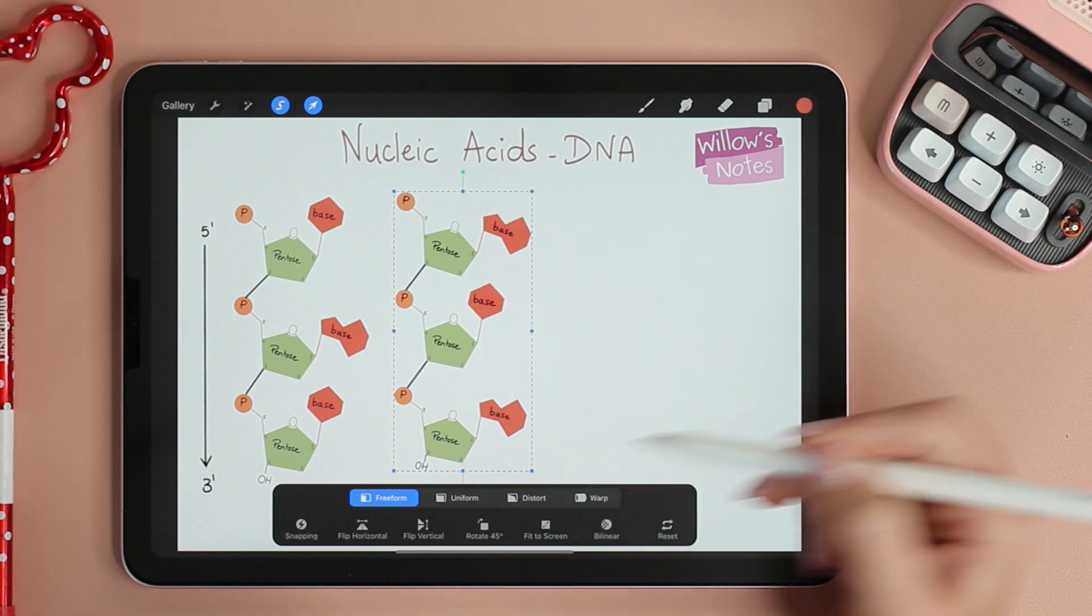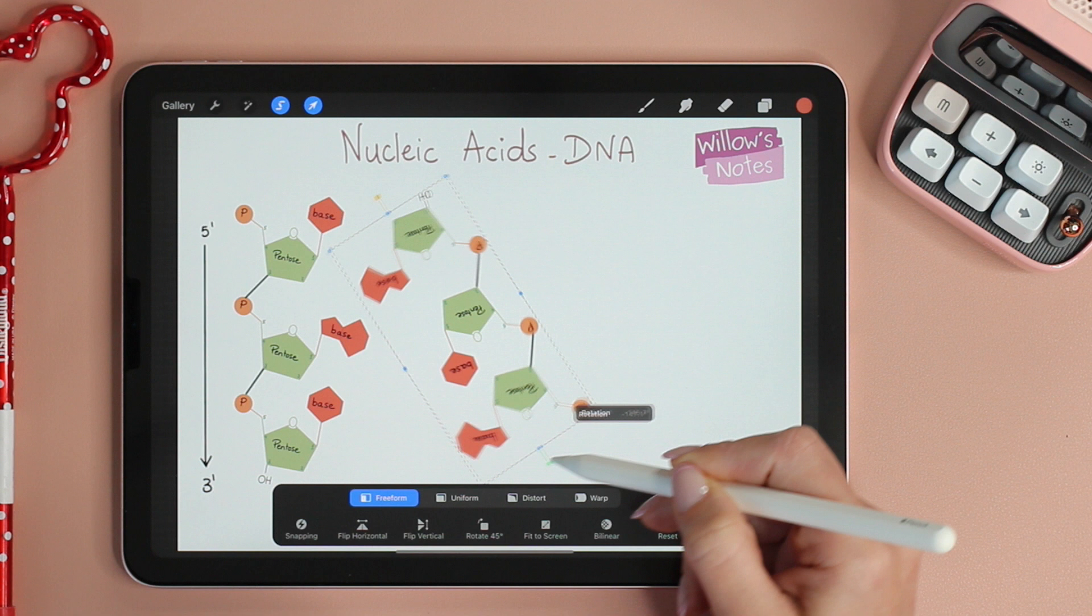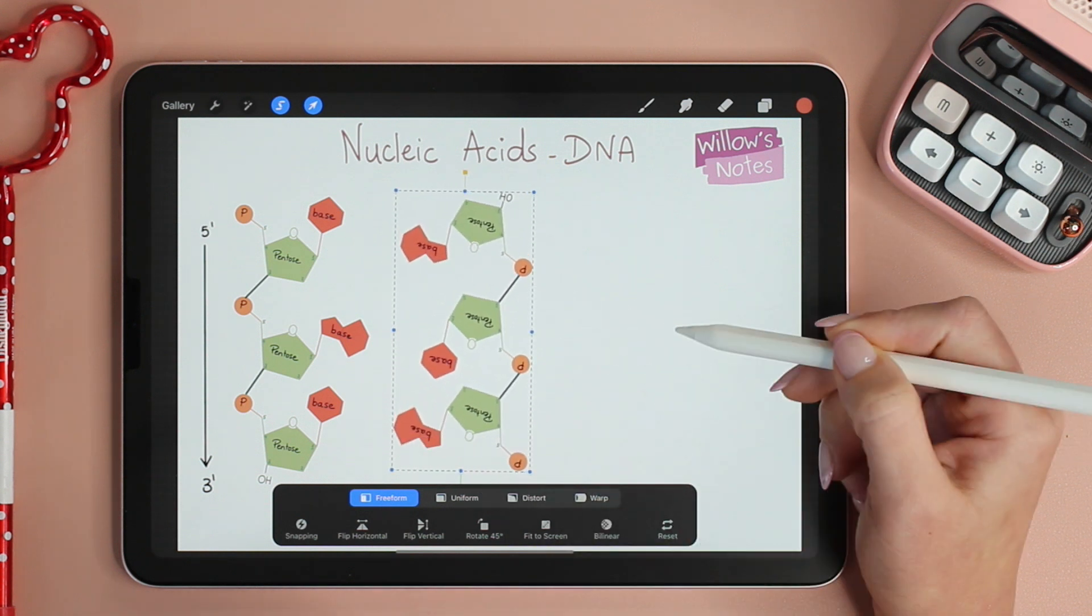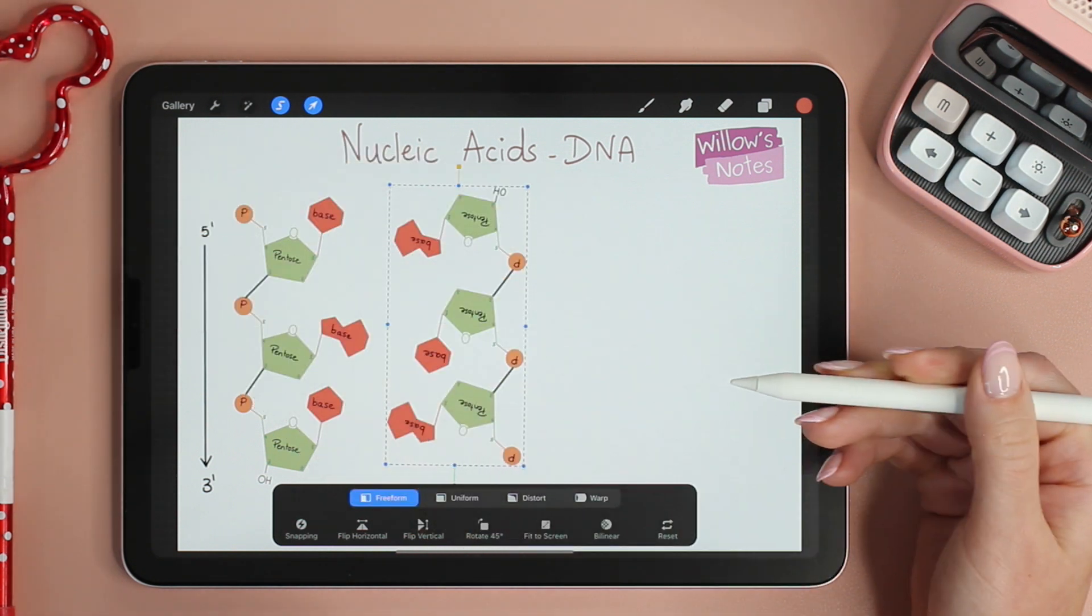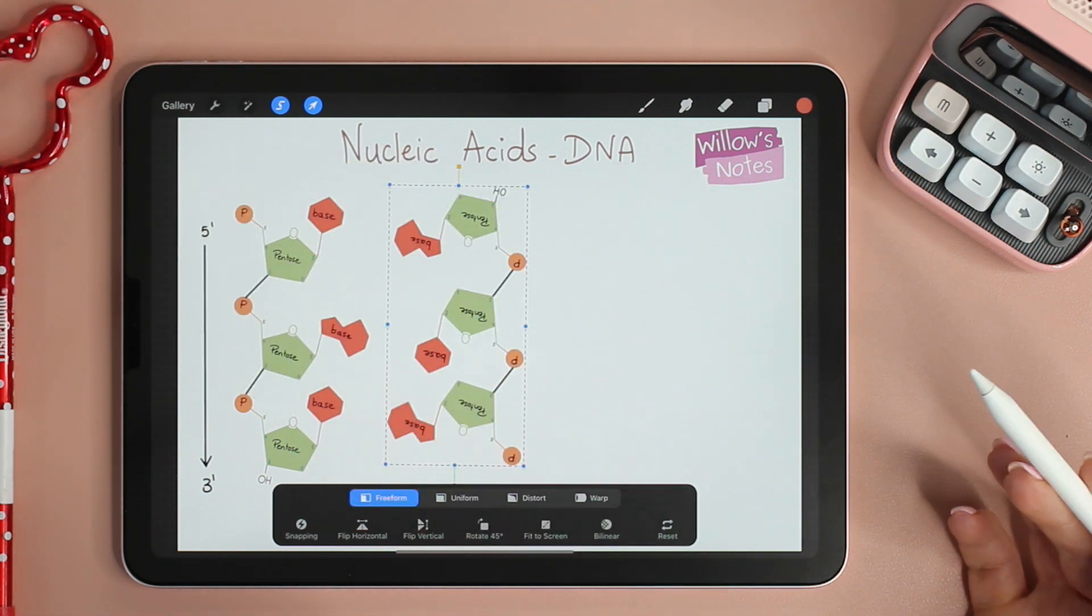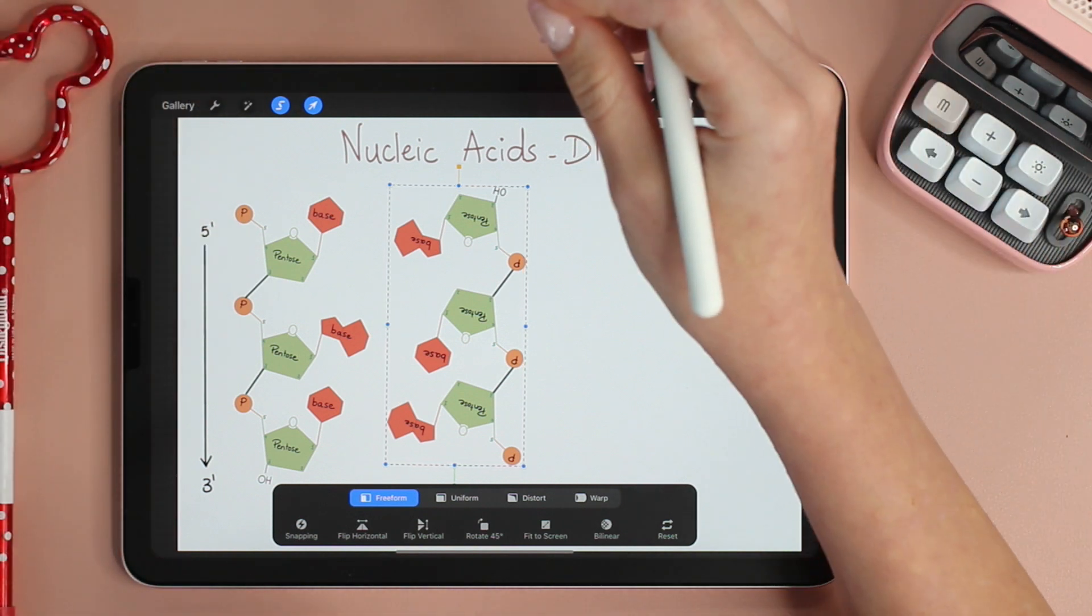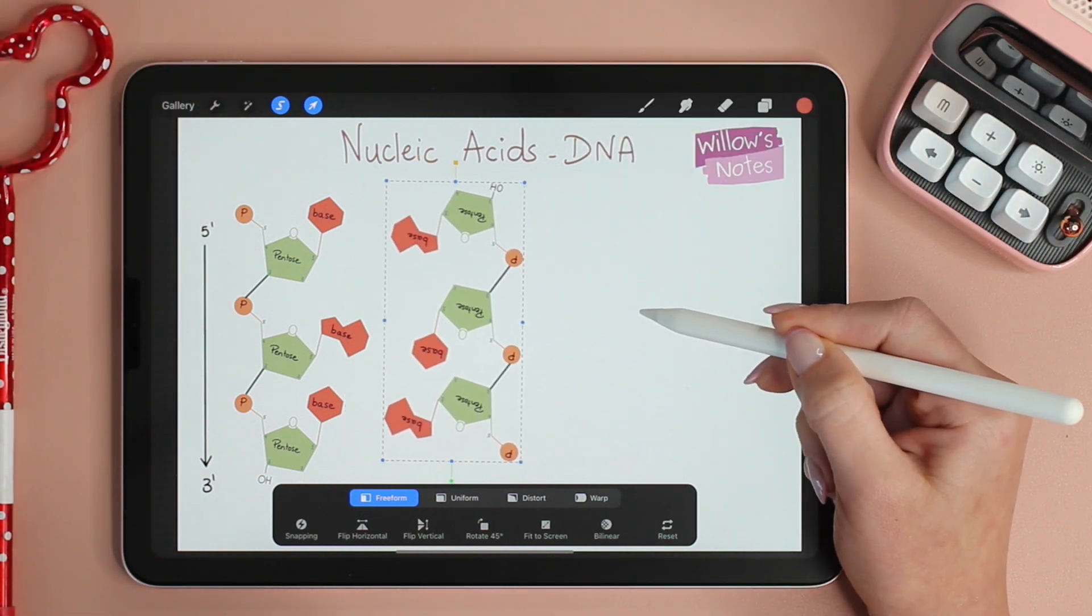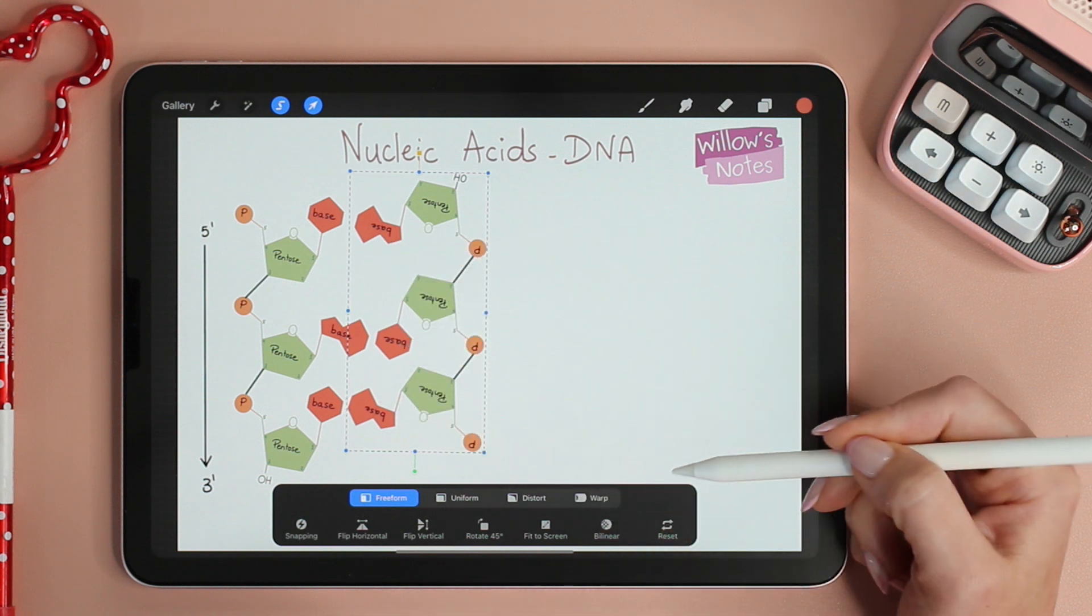So we will take the strand and give it a 180 degrees turn. If you're doing this on a piece of paper, my advice is to draw one strand on a separate piece of paper and the second on another so that you can hold the paper and turn it upside down. And once you turn it upside down, look at how perfectly they align with one another and how the bases pair up with each other.